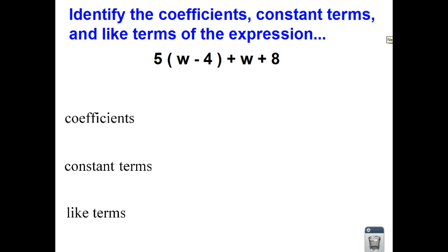So before we start listing the coefficients, constants, and like terms, I see a set of parentheses in this problem right here. Now, if we were following the order of operations, we would try to get this w and negative 4 together. Now, had w been some integer, I could do the math inside of the parentheses first. However, I don't know what w is.